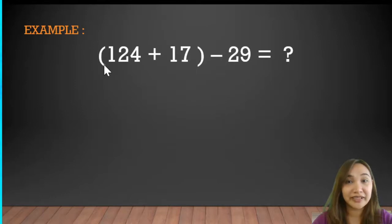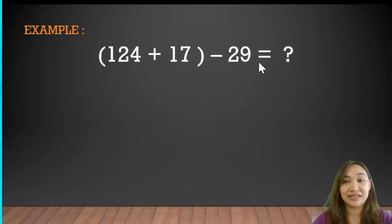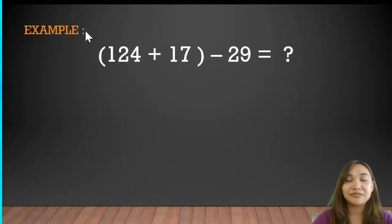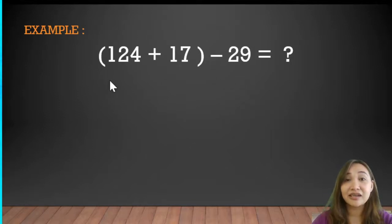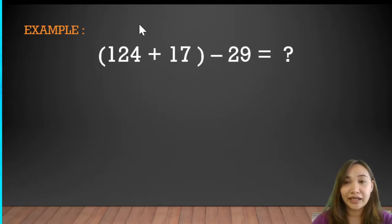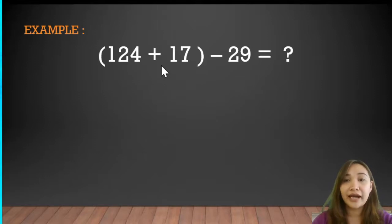Let's start with example number one: open parenthesis 124 plus 17 close parenthesis minus 29 equals what? As you can see, two numbers are separated by a parenthesis, making this a combined operation of addition and subtraction.